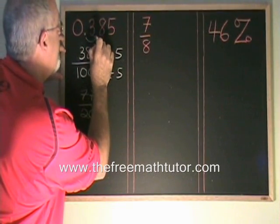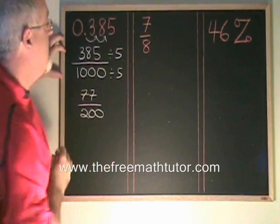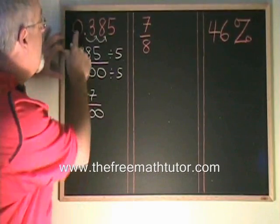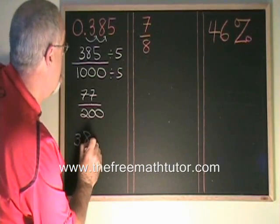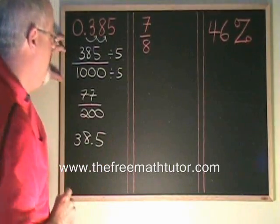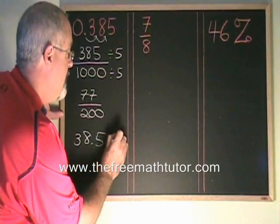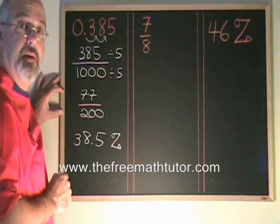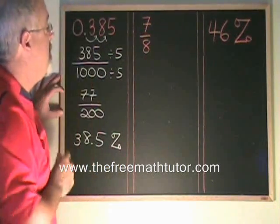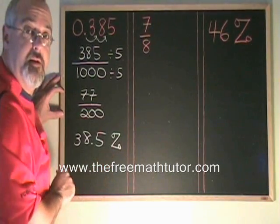There's one, two spaces to the right, and I can write this number as 38.5. 38.5% is the percent version of the decimal 0.385. Don't forget to write your percentage sign.